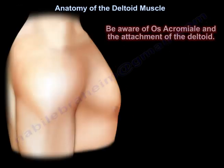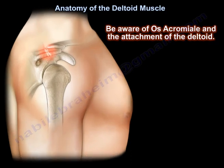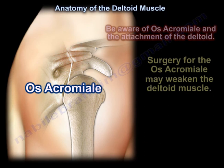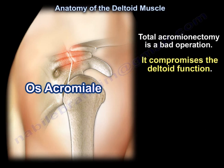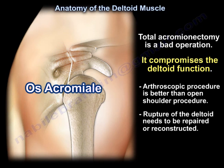Be aware of the os acromiale and the attachment of the deltoid muscle, as surgery of the os acromiale may weaken the deltoid muscle. Total acromionectomy is a bad operation because it compromises deltoid function. Arthroscopic procedure is better than open shoulder procedure. Rupture of the deltoid muscle needs to be repaired or reconstructed.